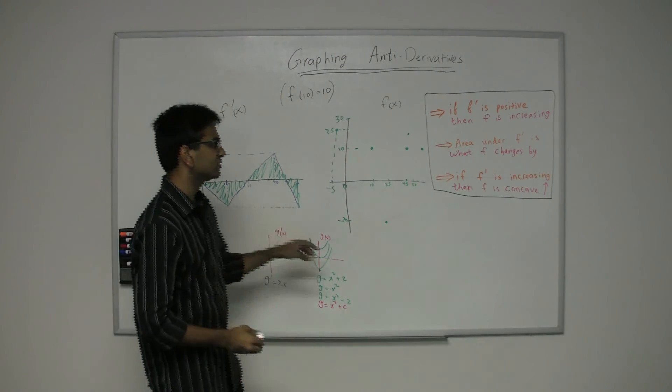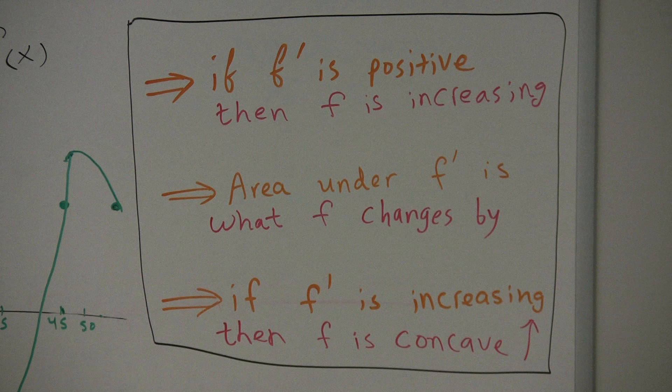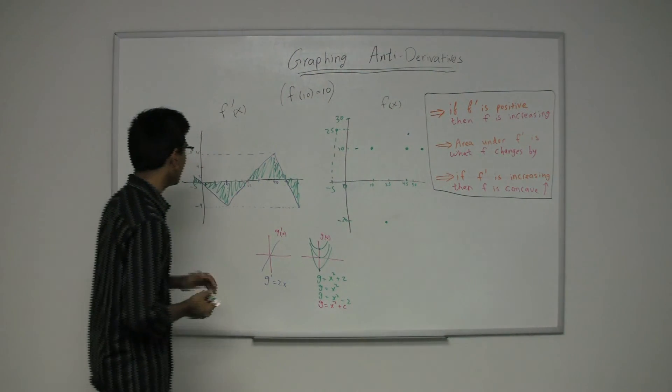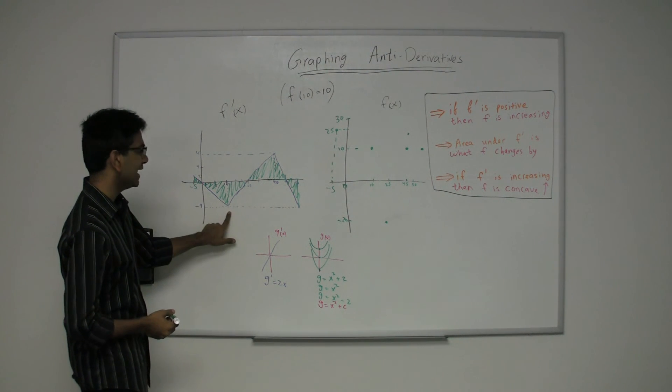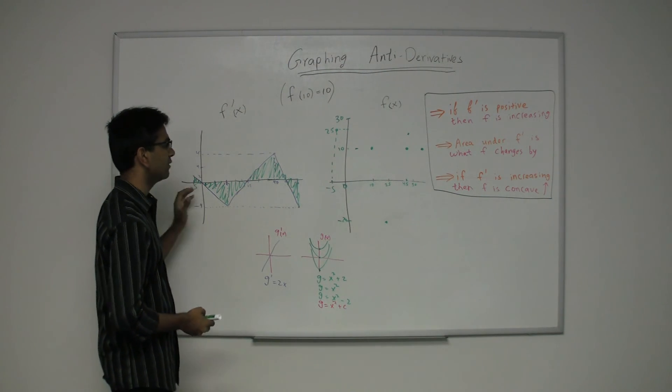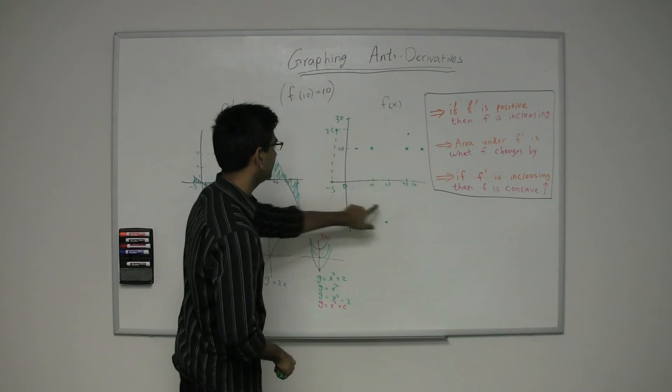So this is what the graph looks like. Now to actually fill it in, let's just keep one last guiding principle in mind, that whenever f prime is increasing, then f is concave up. And of course, again, when f prime is decreasing, then f is concave down. So keeping that in mind, f prime is decreasing between negative 5 and 10. So f is going to be concave down, meaning it's going to look like a sad face, between negative 5 and 10.